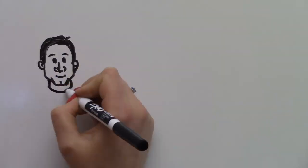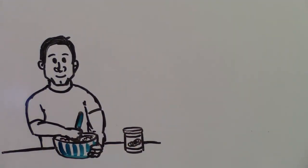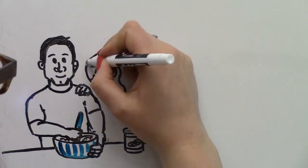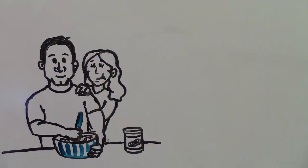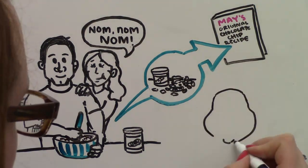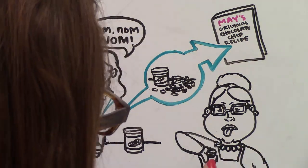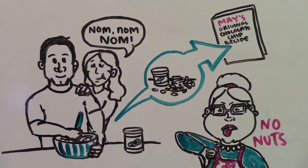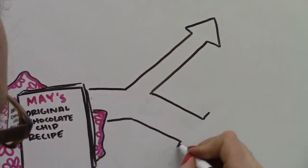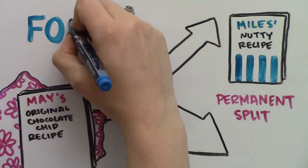Uncle Miles went out on a limb and added peanut butter and nuts to his batch of cookies. His wife and friends all loved peanut butter, so they thought his additions greatly improved the original recipe. But when Uncle Miles tried to upstream his changes, Grandma May, who detests peanut butter, refused to add peanut butter and nuts to her recipe. Uncle Miles resolved to move on with his version of the recipe with no plans of merging the two again. In open source software development, a permanent split like this is called a fork.